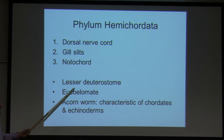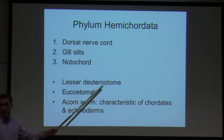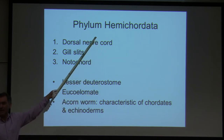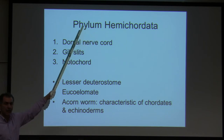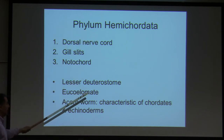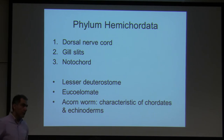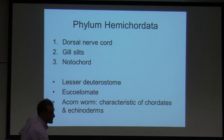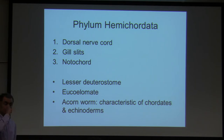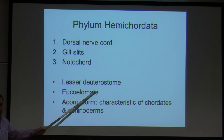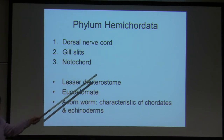They are referred to as lesser deuterostomes — they are deuterostome animals, true coelomate animals. The only phylum we studied so far that was deuterostome was echinoderms: the starfish, sea cucumber. These guys are another group, the next group.